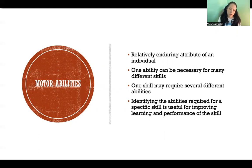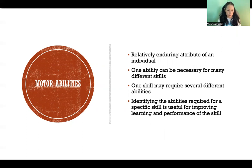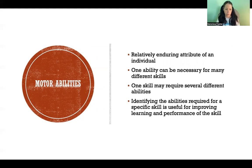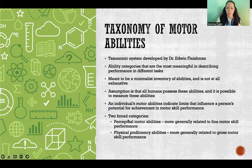Identifying the abilities required for a specific skill is useful for improving learning and performance of that skill. If we can look at the tennis serve and break it down into the specific motor abilities required, that can help ensure that the person learning the tennis serve is developing the correct motor abilities to really improve performance.